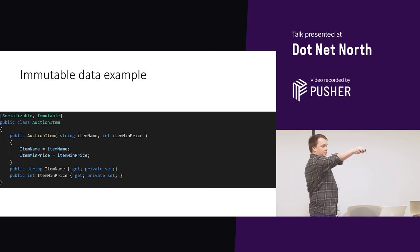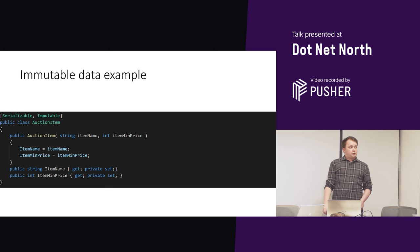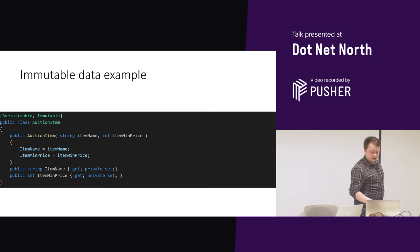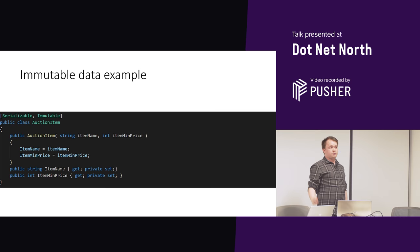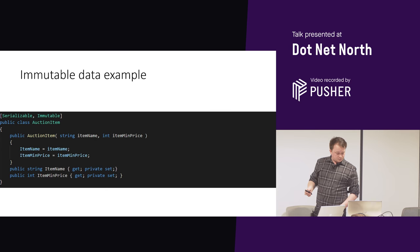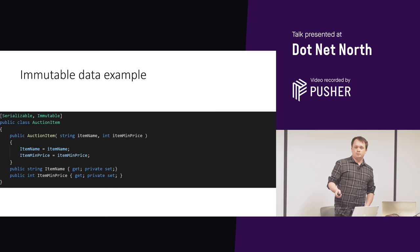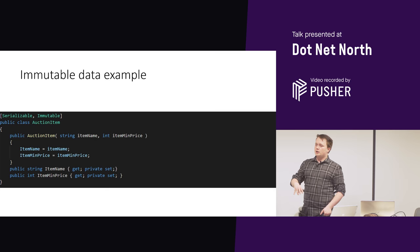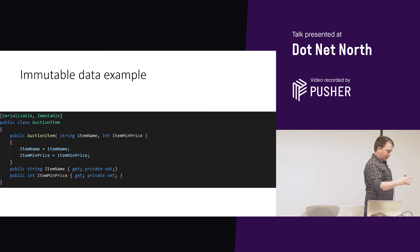Orleans provides many different serializers and deep copiers built in — it will generate serializers and deep copiers for you, and there are ways to add your own if you're sadistic like that. Our auction item has a name and a price — that's a data type. Let's say I need to make a record of the auction: the auction can take three weeks. If my timeout is 20 minutes, that grain is going to deactivate and I'm going to lose the winning bid and all of my bidder references. So I'm going to do some grain persistence.